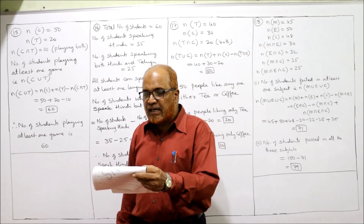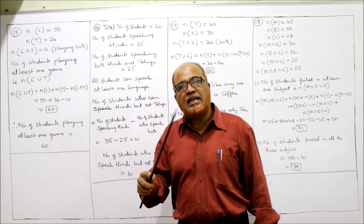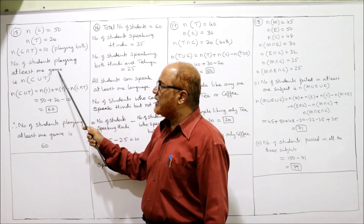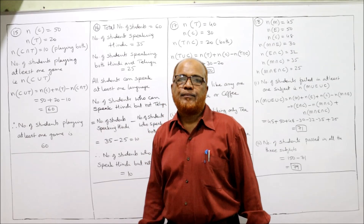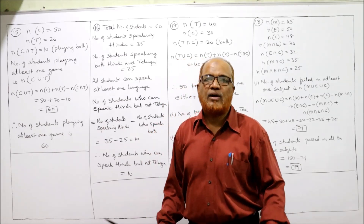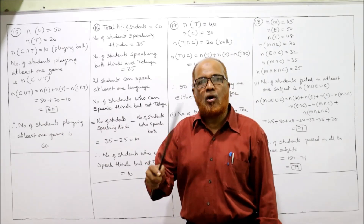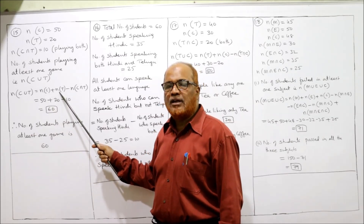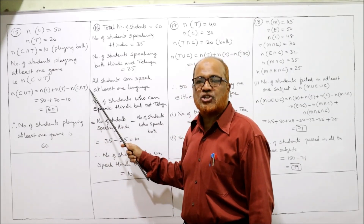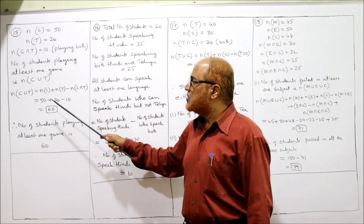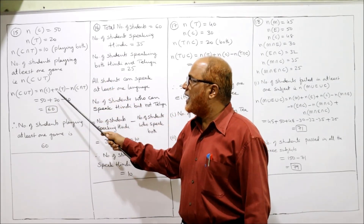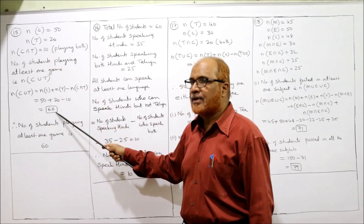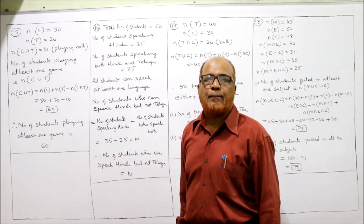The question asks: how many students play at least one game? At least one means either cricket or tennis. So we need N(C ∪ T). The formula is N(C ∪ T) = N(C) + N(T) − N(C ∩ T). So that is 50 plus 20 minus 10.